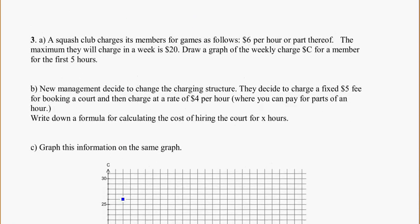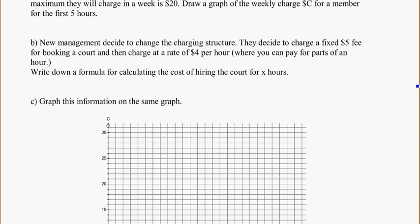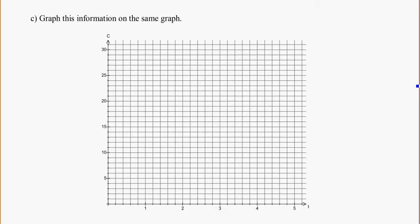If we scroll down our page, we've got another one to look at. A squash club charges its members for games as follows. $6 per hour or part thereof. So part thereof means if I play for five minutes, I still have to pay for the whole hour. Or if I play for an hour and 15 minutes, I have to pay for two hours because it's one whole hour and part of the next. So you have to pay in one hour increments. So again, $6 per hour or part thereof. So every hour you go, it increases by $6. The maximum they will charge in a week is $20. Draw a graph of the weekly charge. See for the first five hours. Okay, so if we come down here, we know we're being charged $6 per hour or part thereof. And there's a maximum of $20 for the squash club.